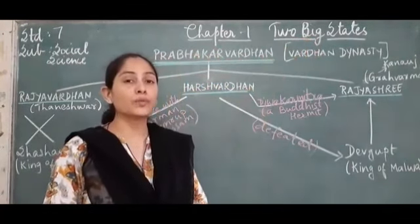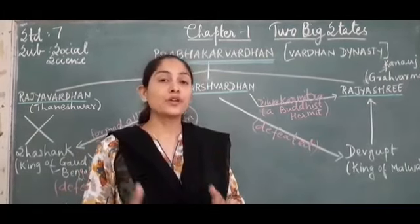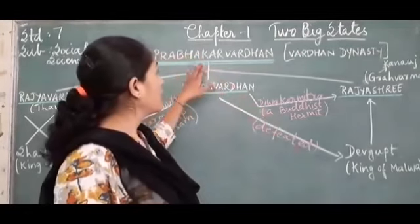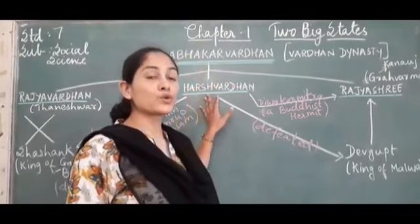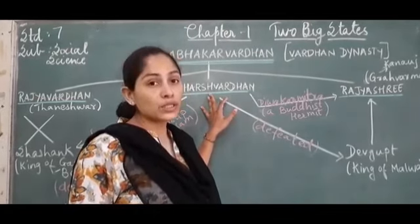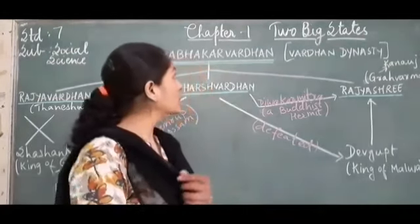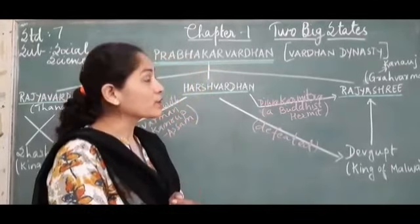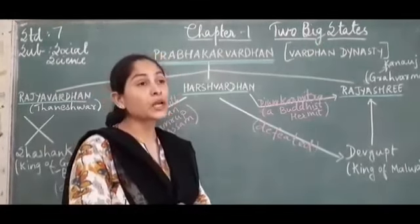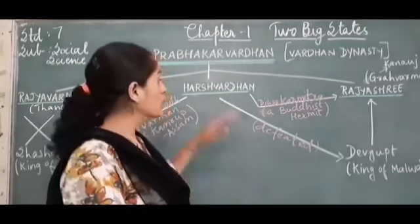India was ruled by two big kings during that time. The first part of India, that is North India, was ruled by Harshvardhan, about whom we are going to study in detail in this chapter. The second was South India, which was ruled by Pulkeshi II. Let us start with North India, which was ruled by Harshvardhan from Kanauj, which is in Uttar Pradesh.